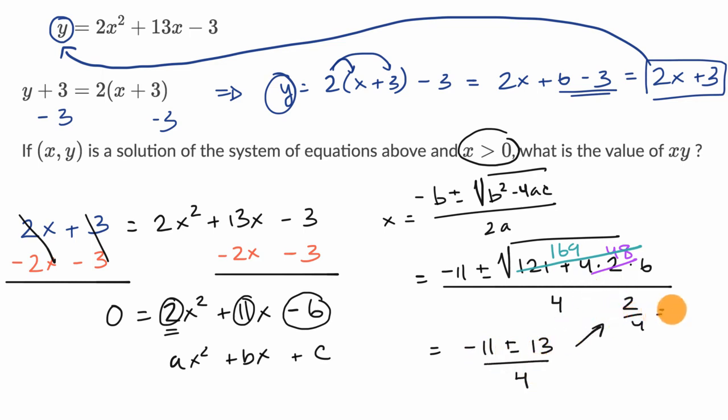So two fourths is equal to one half. This is good. That is greater than zero. The other option would have been negative 11 minus 13, which is negative 24 over four, which is equal to negative six.